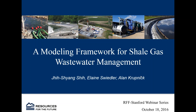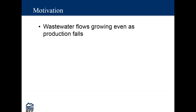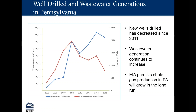Ji Shang is here with me. He's the main author of this effort, and Elaine is our research assistant. This is about a modeling framework for shale gas. Our model kind of embodies what the other two speakers are going to be talking about. The motivation for this topic is that wastewater flows are growing even as production falls. You can see that unconventional wells drilled were going up and then coming down, but the wastewater flows have been continuing to go up, though they dropped a little bit between 2014 and 2015.